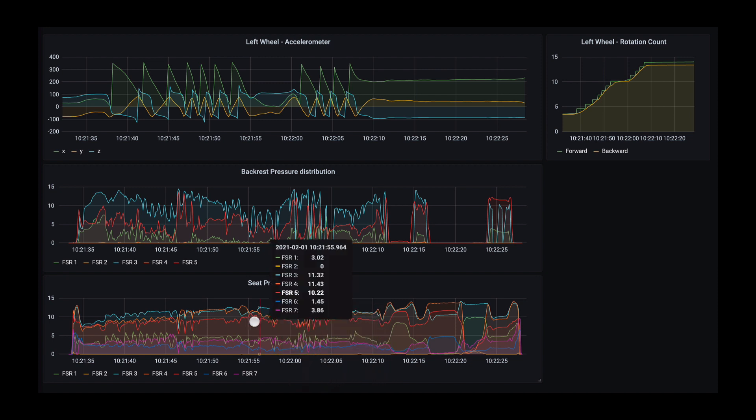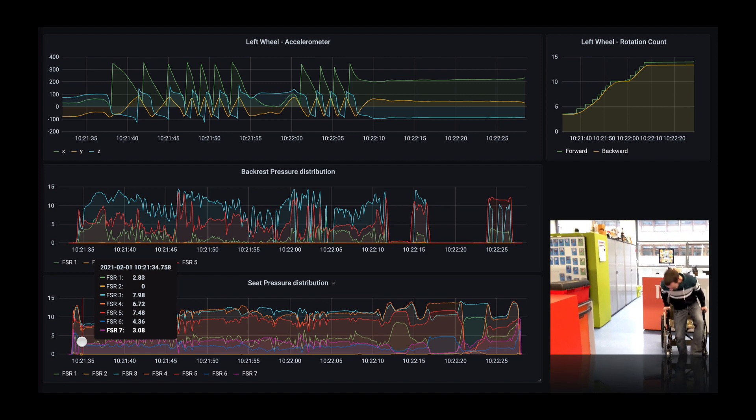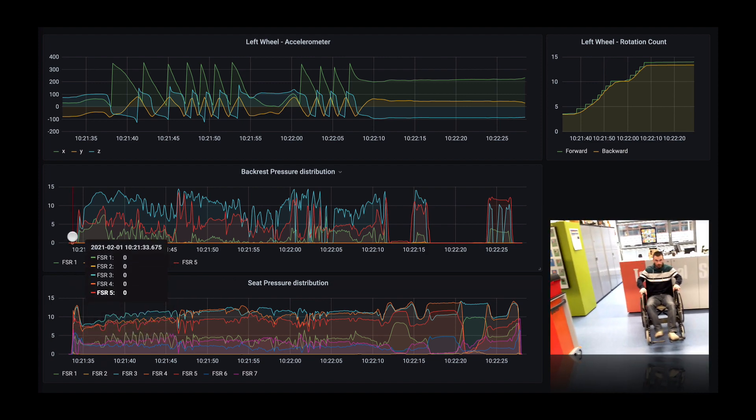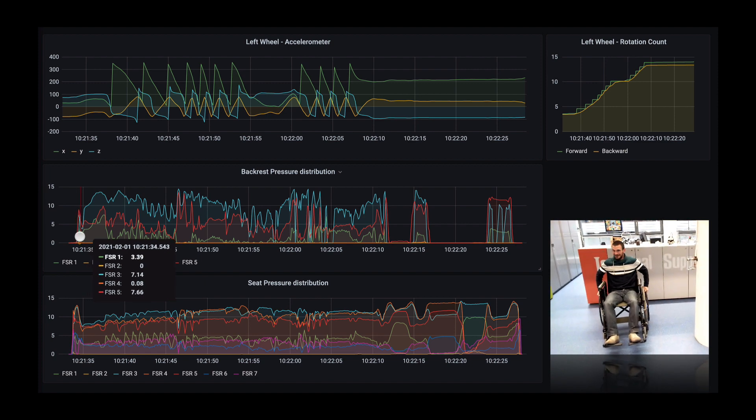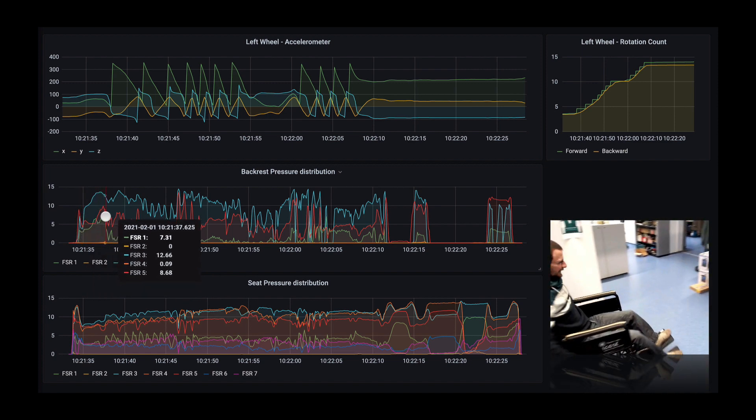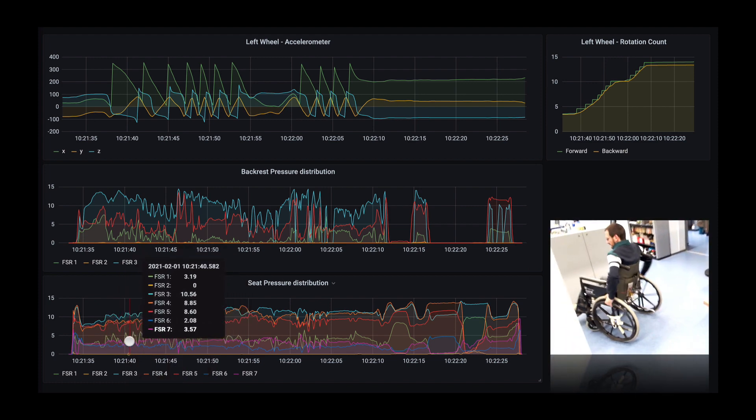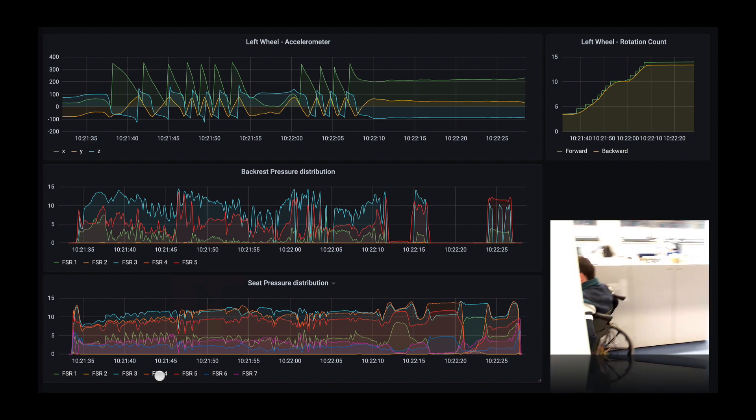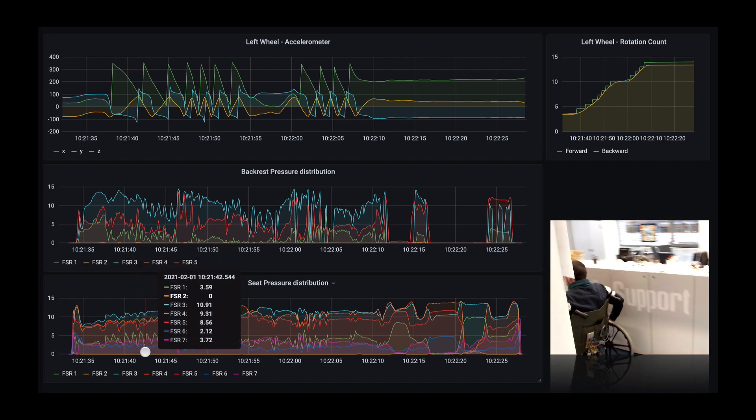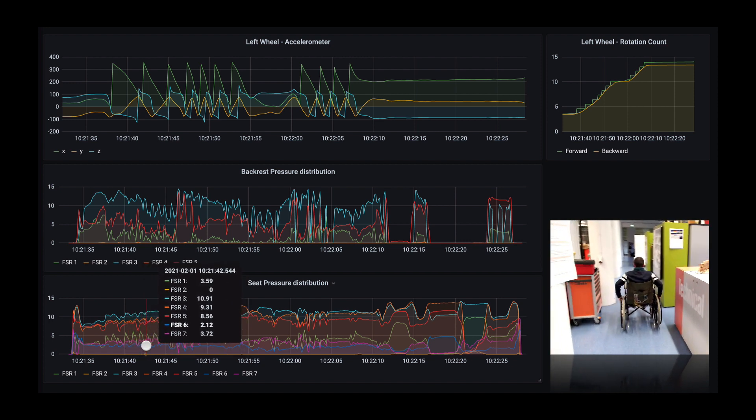And then we have the FSRs, the pressure sensors, with the backrest distribution and the seat distribution. So a stronger force when I'm sitting at the beginning but also nothing on the backrest and I'm leaning a little bit on the back. And then as I'm propelling myself we can see that this distribution, we could almost detect the propelling and counting the rotation even with the pressure sensors.